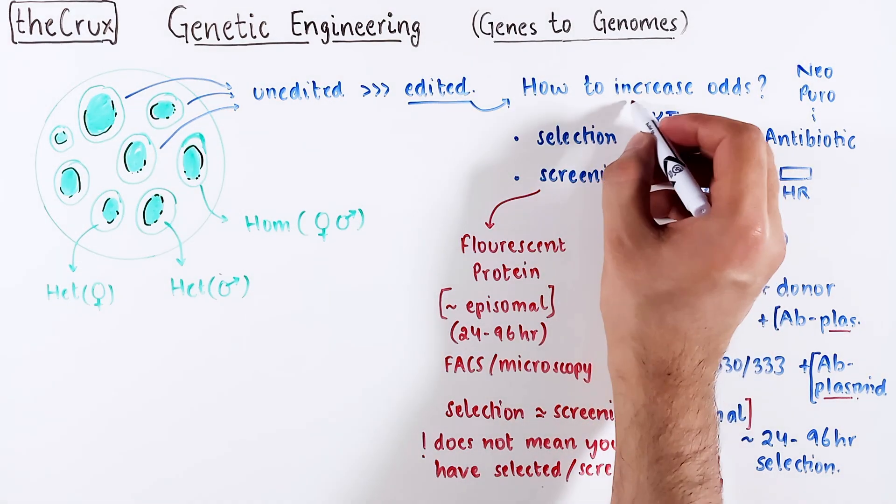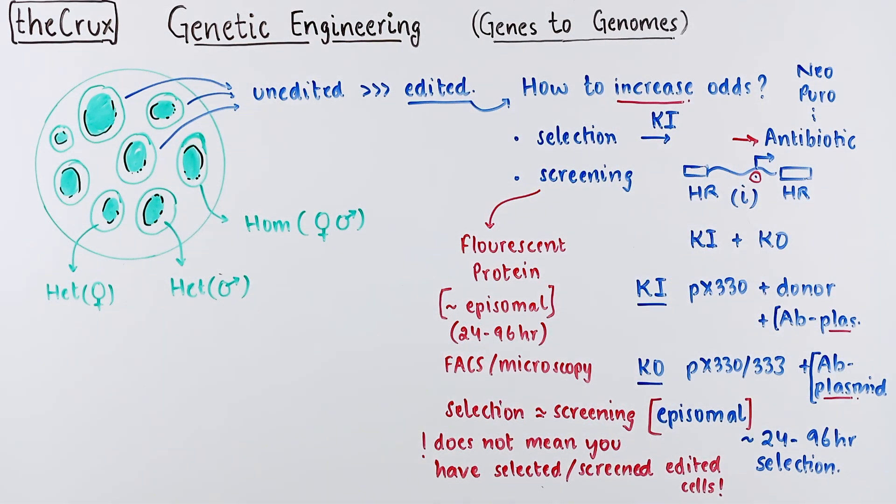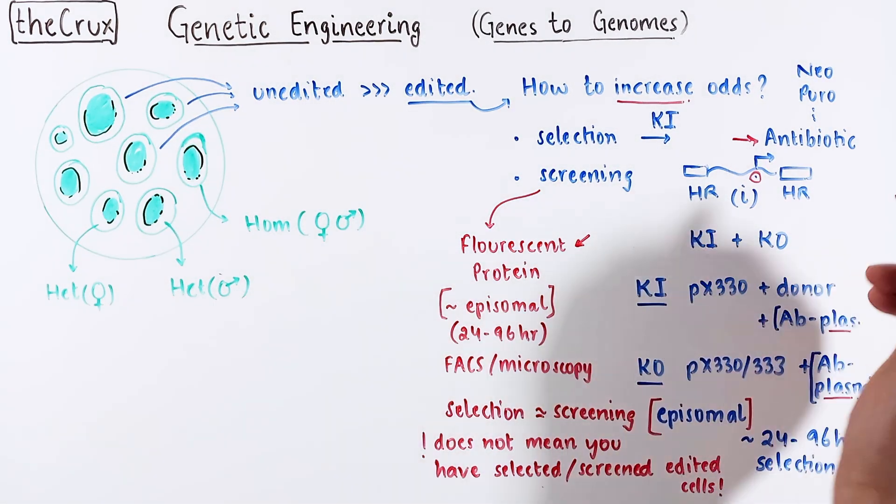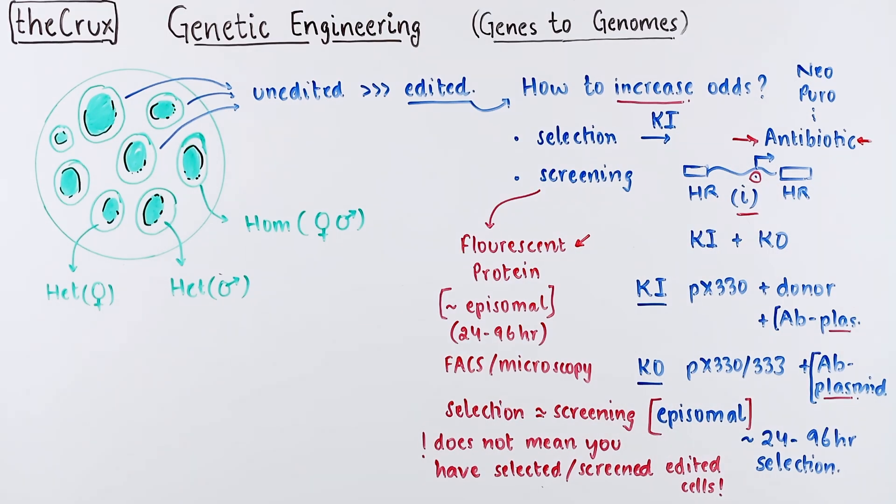Otherwise, it's not super great at increasing the odds of getting an edited cell population. If you have added a marker into the donor insert, at least for knock-ins, then you are truly screening or selecting the edited cells.